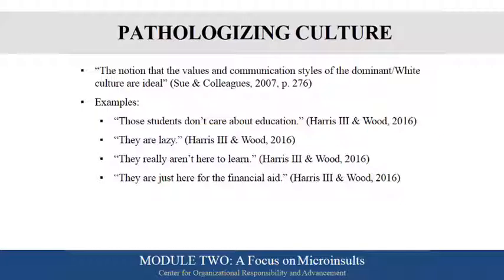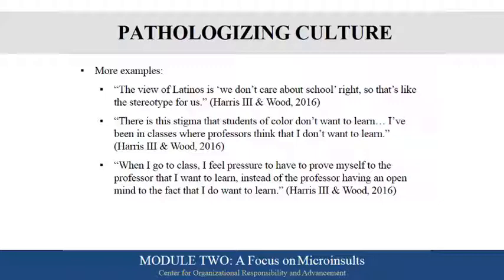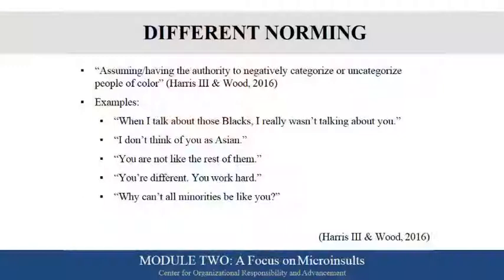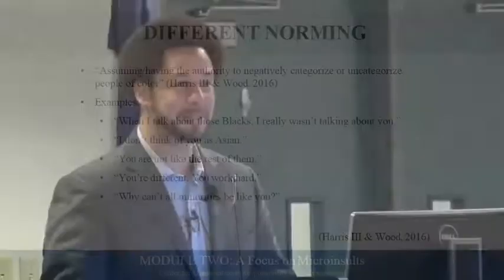Pathologizing culture: saying 'those students don't care about education, they're lazy, they aren't really here to learn, they're just here for the financial aid.' A Latino student said, 'The view of Latinos is we don't care about school — it's just that stereotype of us.' Another student said, 'There's a stigma that students of color don't want to learn. I've been in classes where professors think we don't want to learn.' Another said, 'When I go to class, I feel pressured to prove to the professor that I want to learn instead of the professor having an open mind.' There's also what we call different norming — separating a student from their group, saying something negative about the group but then separating them. 'When I was talking about those Blacks, I wasn't talking about you.' 'I don't think of you as Asian, I just think of you as one of us.' 'You're not like the rest of them.' 'You're a credit to your race' — I've actually had someone say that to me, and they really thought they were complimenting me.